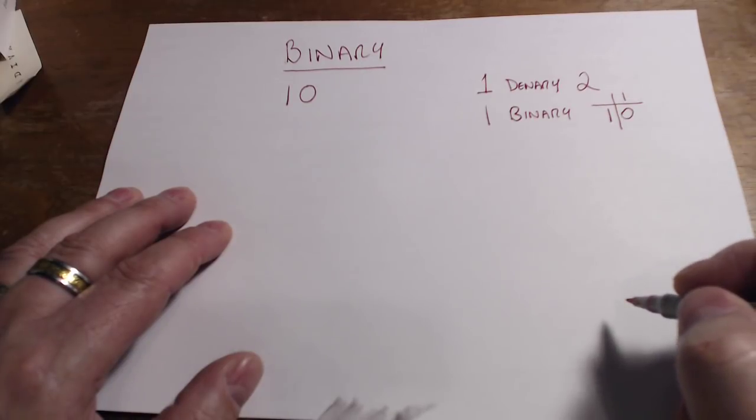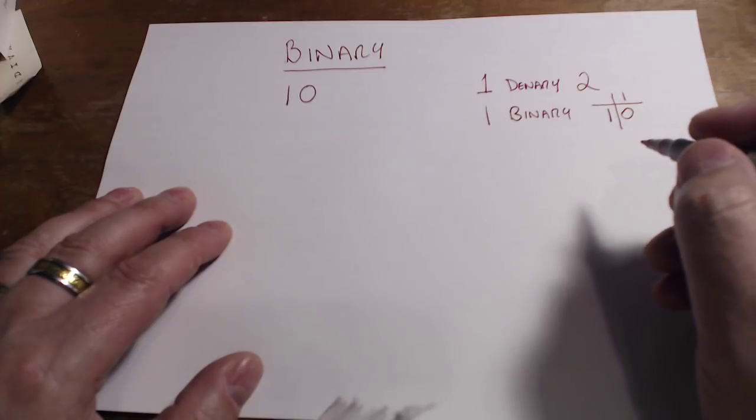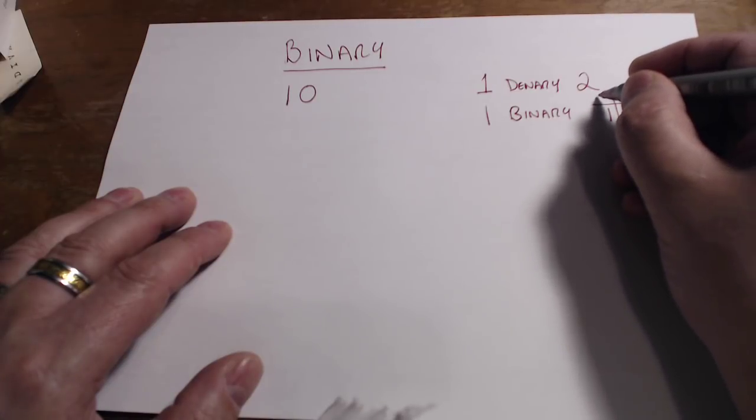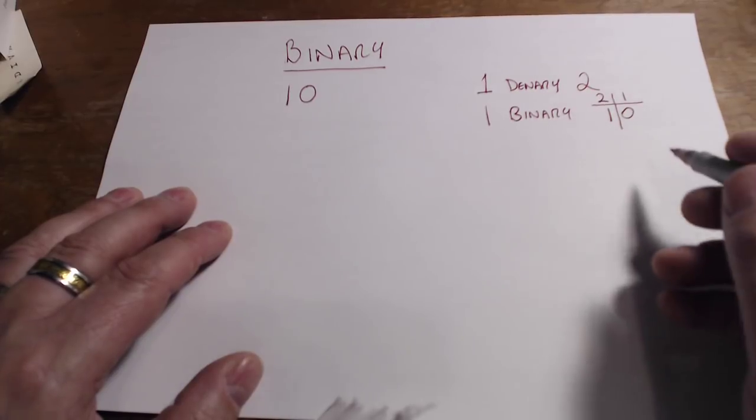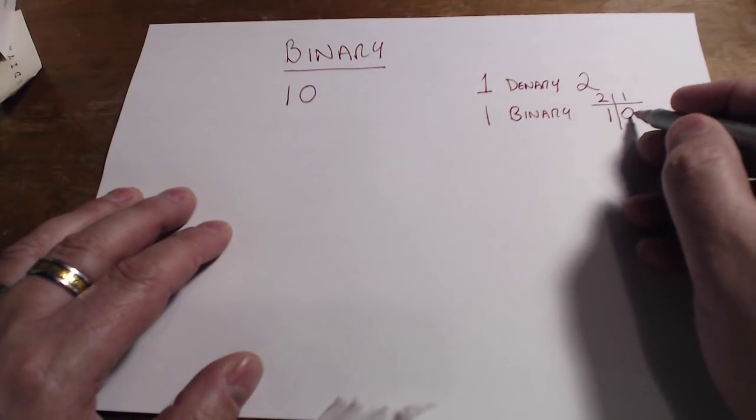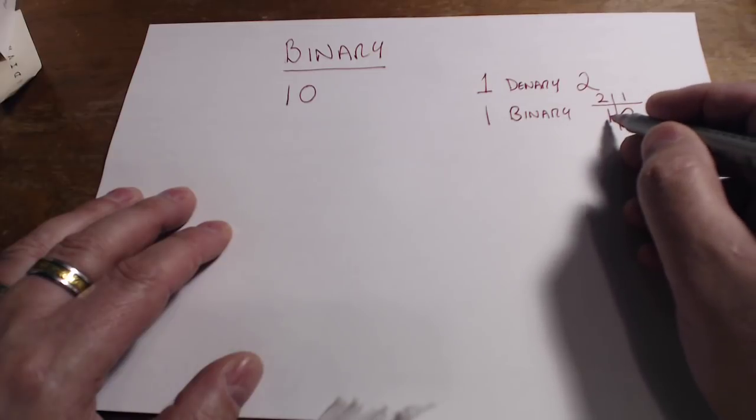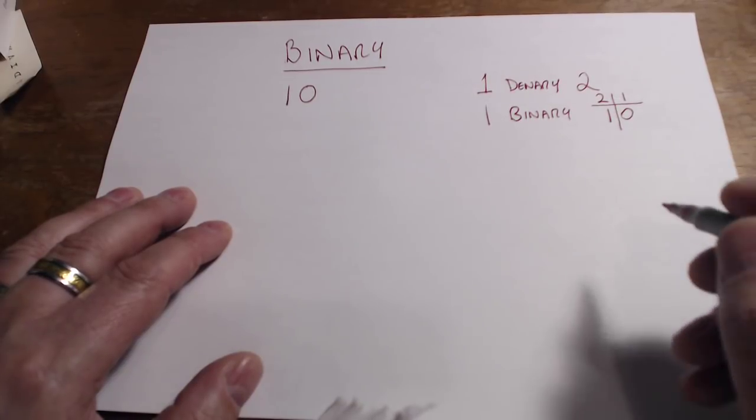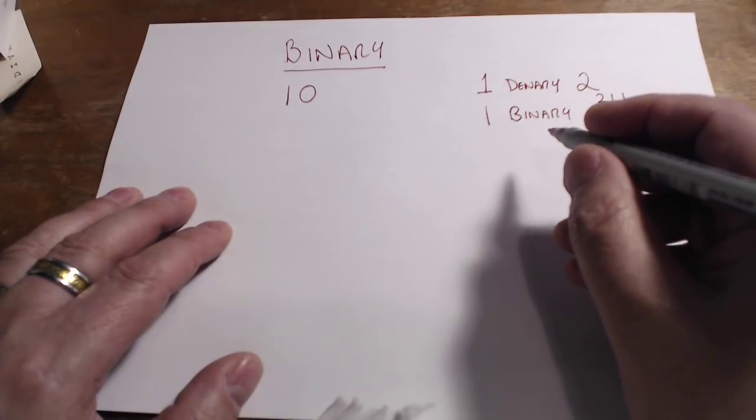The first column has a value of one, just like our denary system which has a maximum value of nine. The second column has a value of two. So we can see that there's nothing in the first column, that's zero. One zero means one is equal to two.